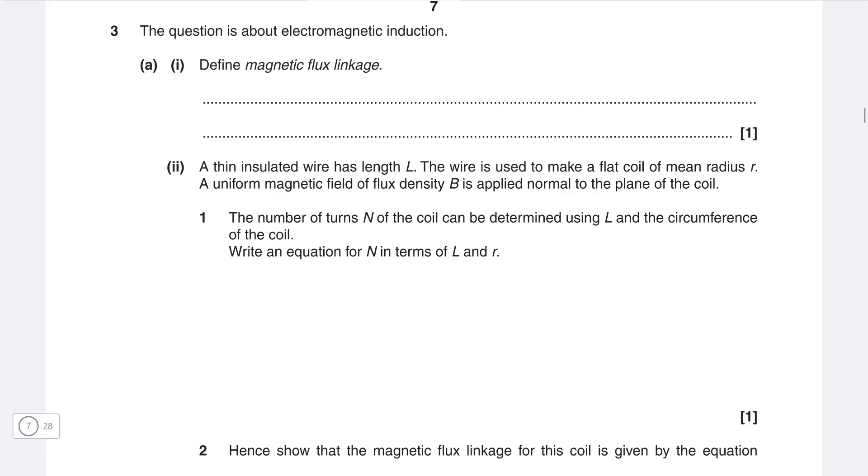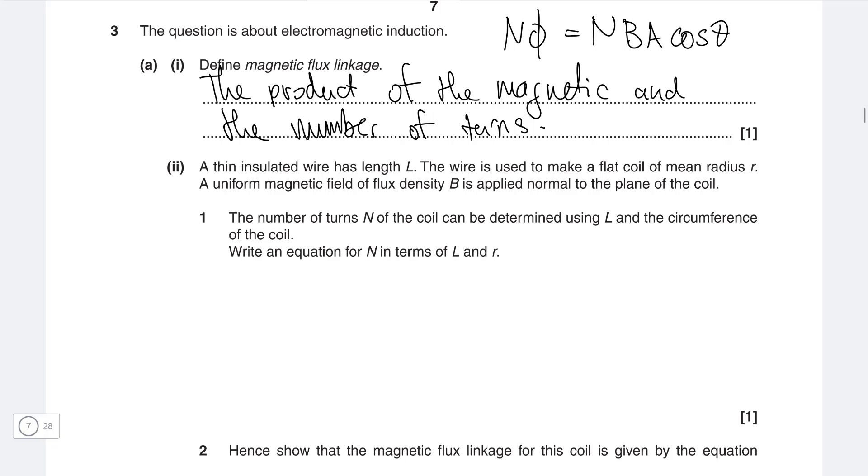This is the product of the magnetic flux and the number of turns. Magnetic flux linkage is n times phi. You could also define it as n, b, a, cos theta, but then afterwards you would need to define all of the individual terms.